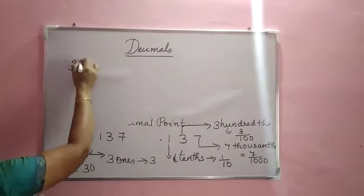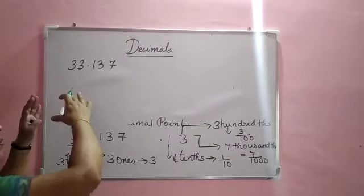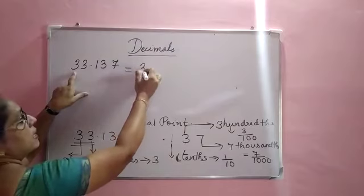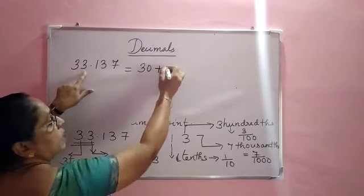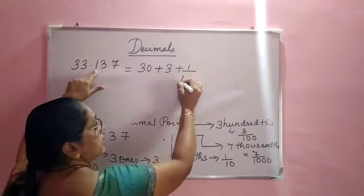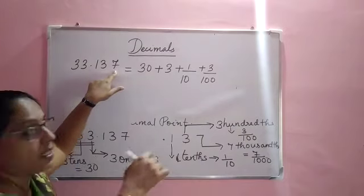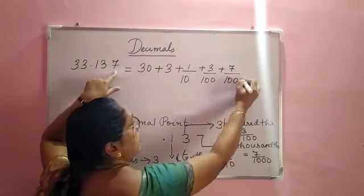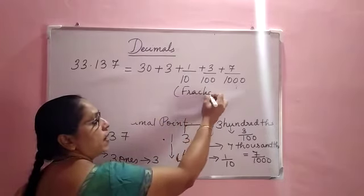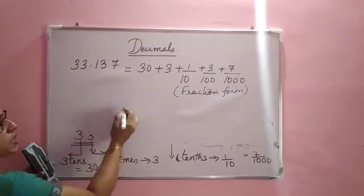So the number is 33.137, and we have seen the place value of each digit. Now we can make the expanded form. The expanded form starts with 30 plus 3, then plus 1/10, plus 3/100, plus 7/1000. This is called the expanded form of a decimal number, and this expanded form is also known as the fraction form.